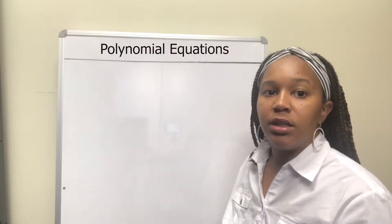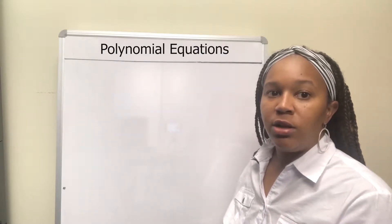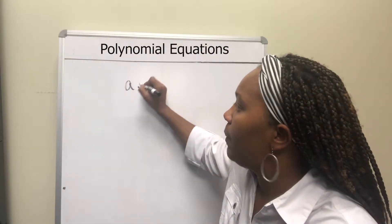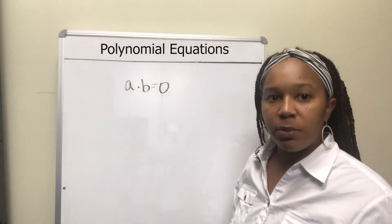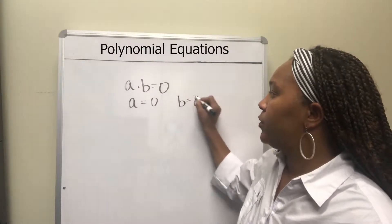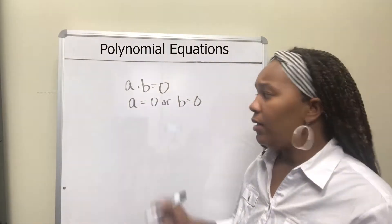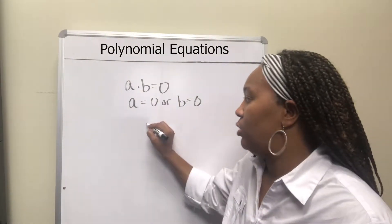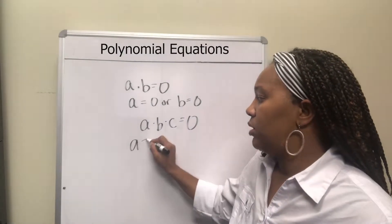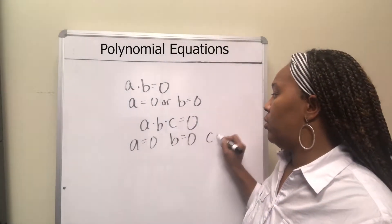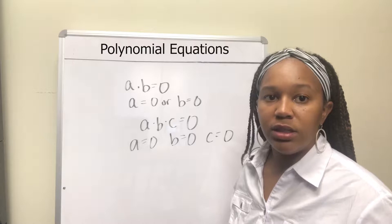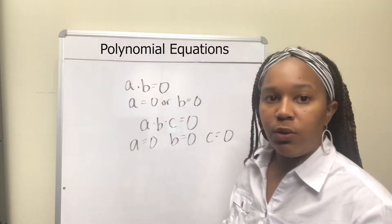We're going to look specifically at how to solve polynomial equations by factoring. Just like when we solved quadratic equations by factoring, we use the zero product property — the property that says if you're multiplying two things and they give you zero, then one of those things has to be zero. So either a is zero or b is zero. And if we have more than two factors, say three factors a times b times c, then also one of those has to be zero: either a, b, or c. So regardless of how many factors you have, if they multiply to give you zero, you take each factor and set it equal to zero.